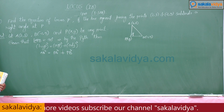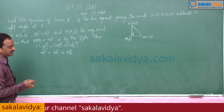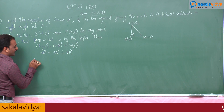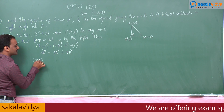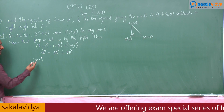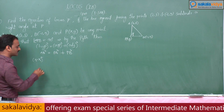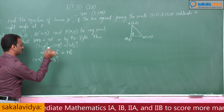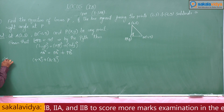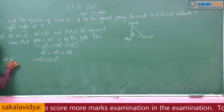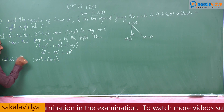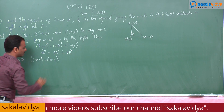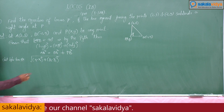We know that the formula for the distance between any two points is: root of (x2 minus x1) whole square plus (y2 minus y1) whole square. So the distance between two points is root of (x2 minus x1) whole square plus (y2 minus y1) whole square.